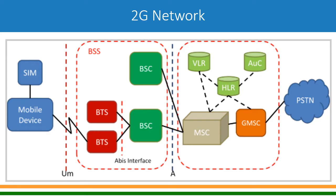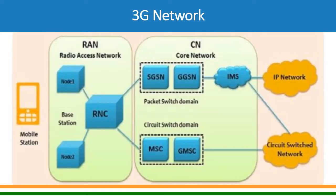Now let us look at how the 3G network evolved from 2G. In 3G, the mobile phone is called mobile station. On the radio side, this is called the Radio Access Network. You have Node B — these are base stations. In 2G they were called BTS; now they are called Node B.